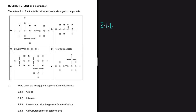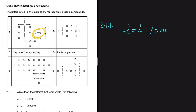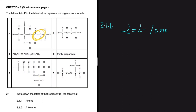Which letter represents an alkene? We want to identify the functional group of an alkene. In an alkene, we have a double bond and the name ends with 'ene'. So when we go to our table, whatever has a double bond or a name ending with 'ene' is an alkene. Clearly, compound A has a double bond, so as soon as we see a double bond we know it's an alkene. So we can write A.